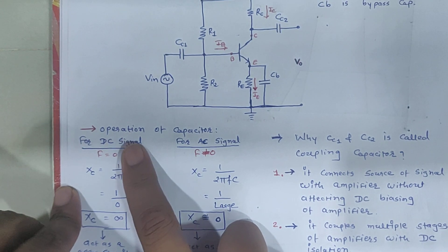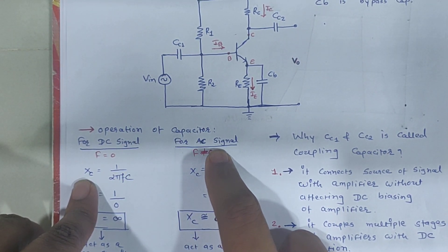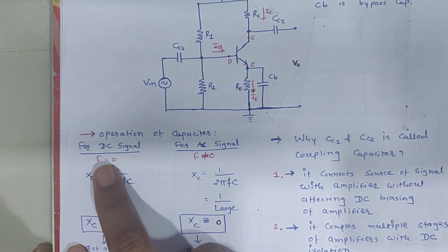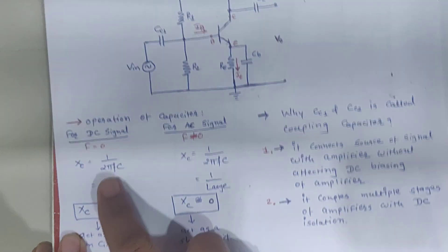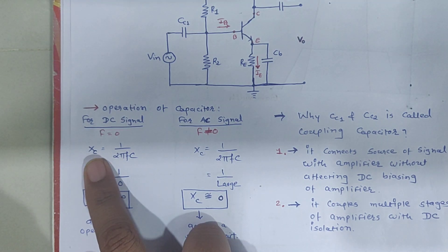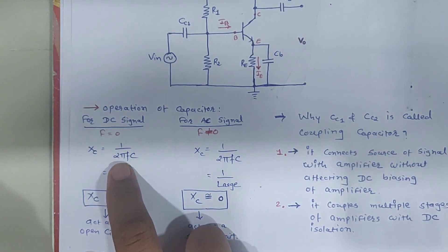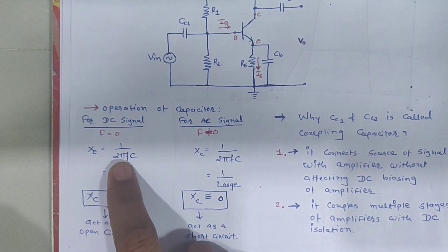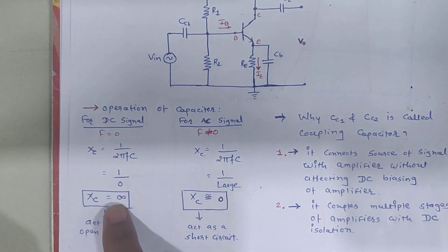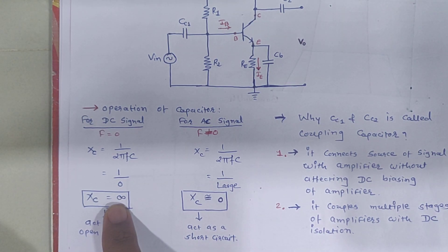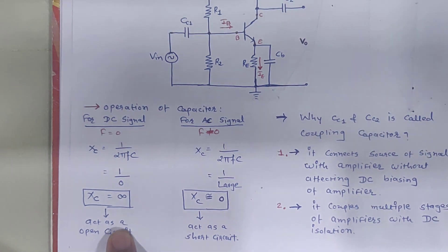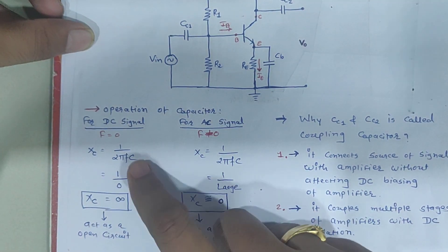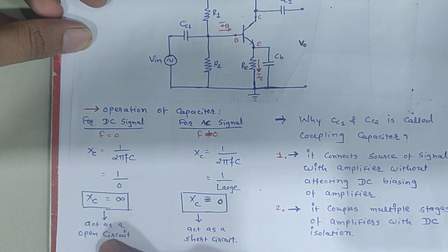Let us discuss the behavior of a capacitor for DC and AC signals. For DC, the frequency is 0, so the reactance XC = 1/(2πFC) = 1/0, which is infinite. Infinite resistance means the capacitor acts as an open circuit for DC signals.